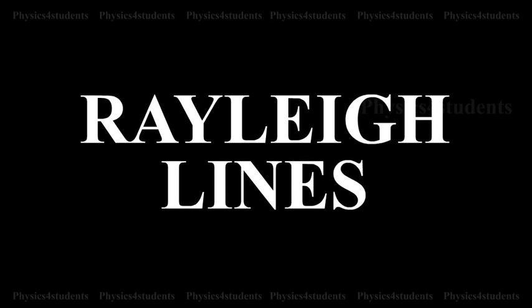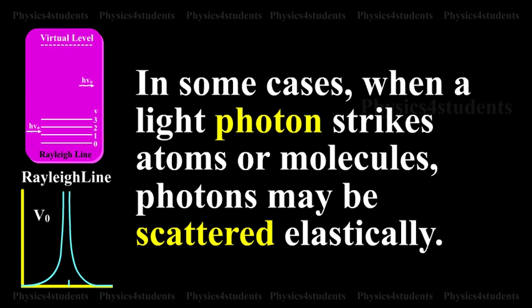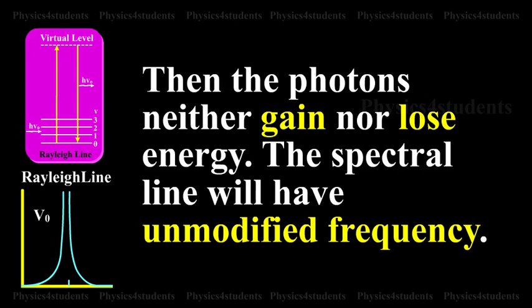Rayleigh lines. In some cases, when a light photon strikes atoms or molecules, photons may be scattered elastically. Then the photons neither gain nor lose energy. The spectral line will have unmodified frequency.